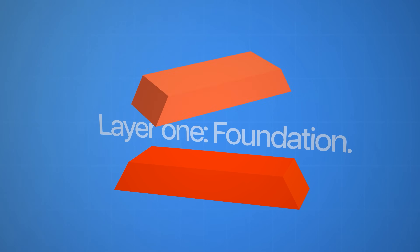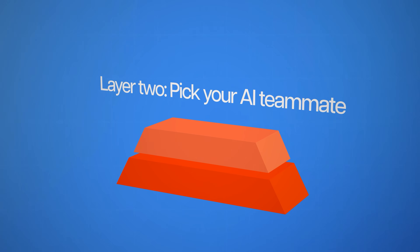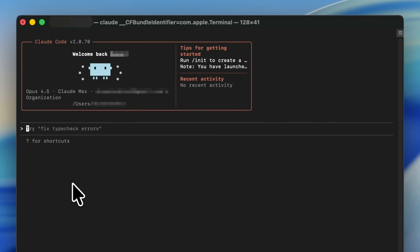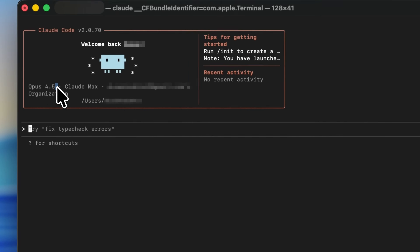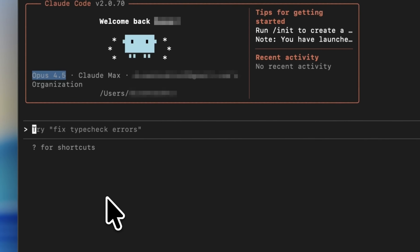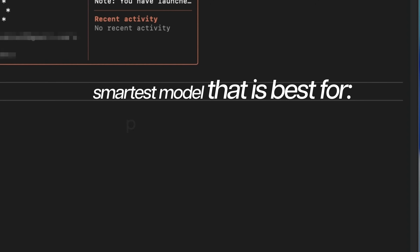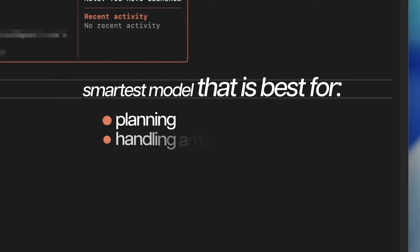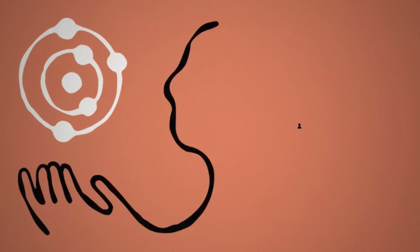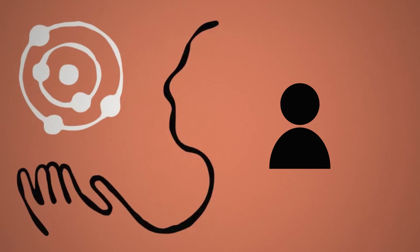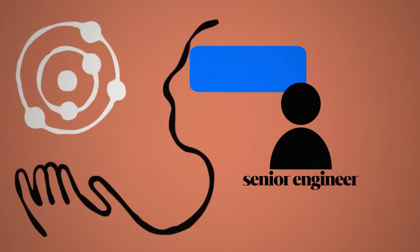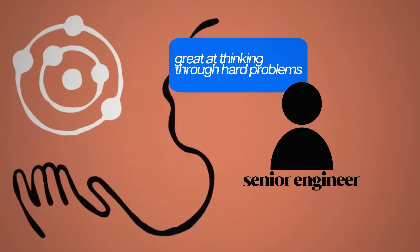The second layer is to pick your AI teammate. Choosing the right model matters a lot because each model is optimized for different things. Their newest model, Claude Opus 4.5, is their smartest model — best for planning and handling ambiguous tasks. Think of Opus as your senior engineer who is great at thinking through hard problems.